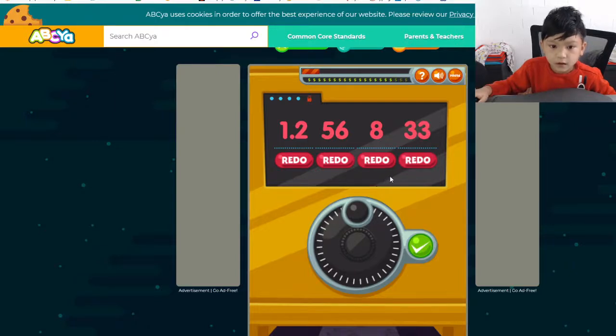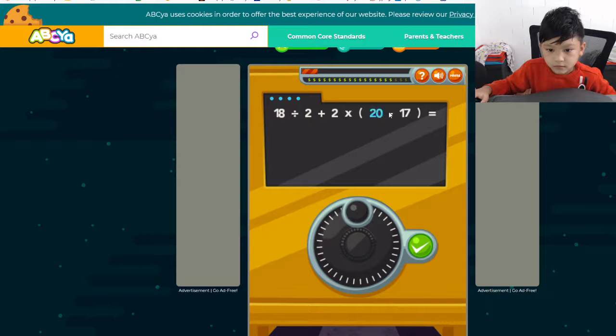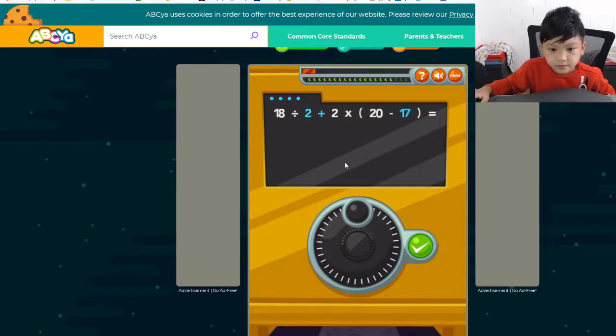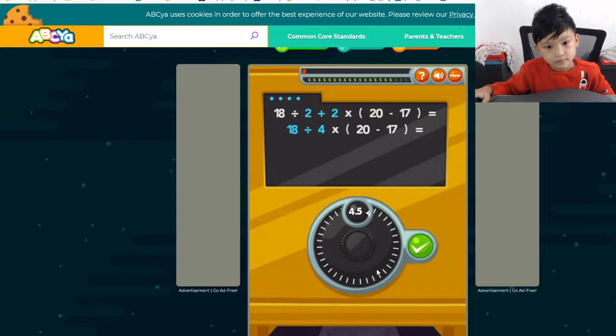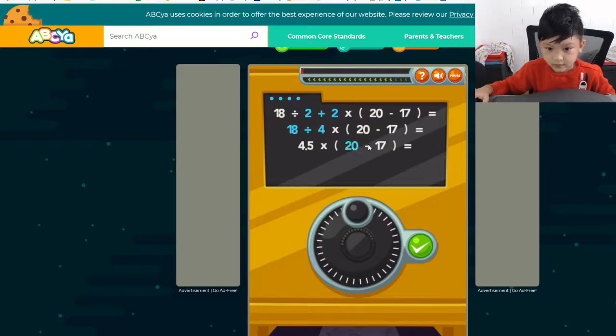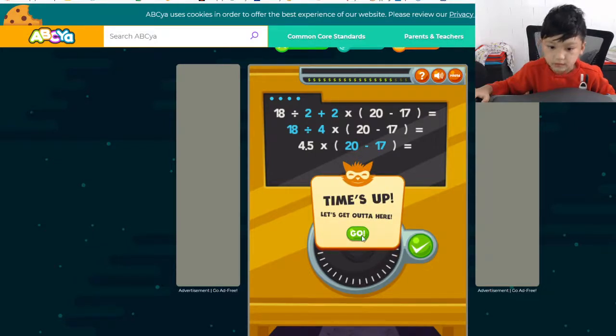That's all wrong. 20 minus 17. Maybe it's the 2 plus 2. And then, 18 divided by 4. Nice. Half of 9. And then, 20 minus 17. Time's up. Let's get out of here.